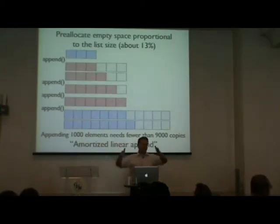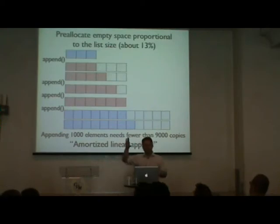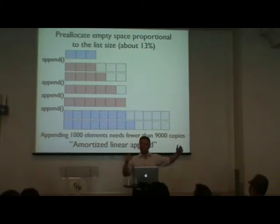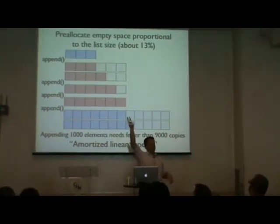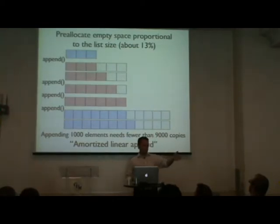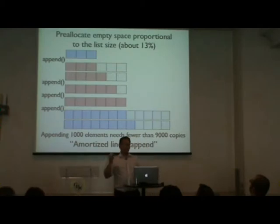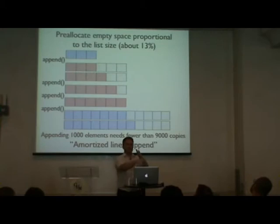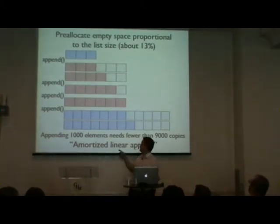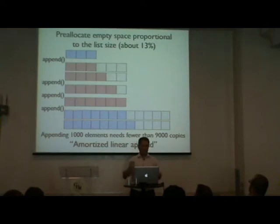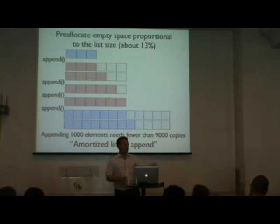The fix is simple: you do geometric pre-allocation — pre-allocate extra space proportional to the list size. Python uses about 30% larger allocation each time. This turns the O(n²) algorithm into an amortized linear time operation. Every once in a while it takes a big cost, but averaged over all elements, appending 1000 items takes about 9,000 pointer copies rather than half a million. You get effectively O(1) amortized time per append.